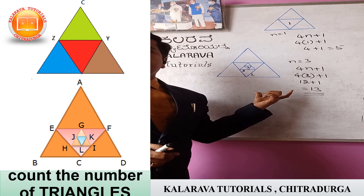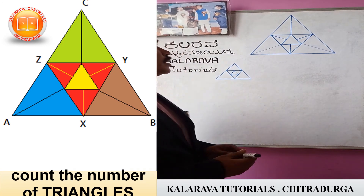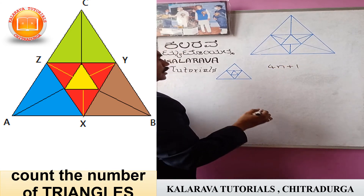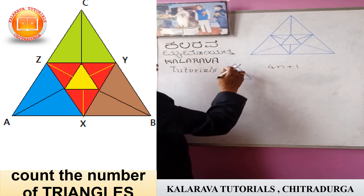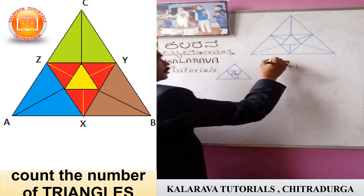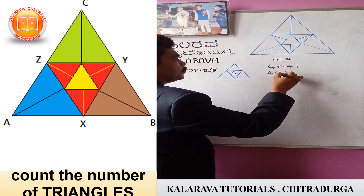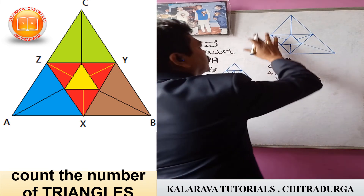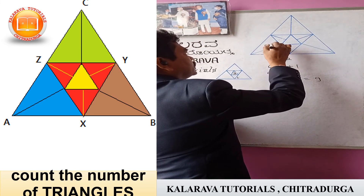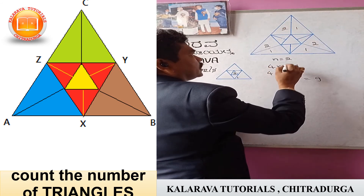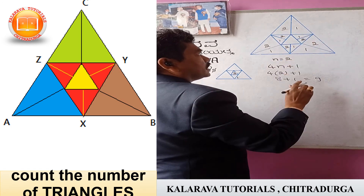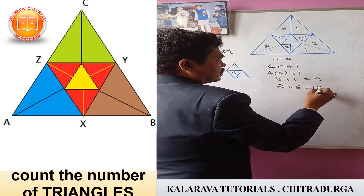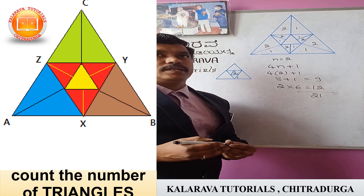We have to apply this formula for this type of triangles — find out the number of triangles in this diagram. In this diagram, you identify this one and apply the formula 4n plus 1. The triangles embedded inside the bigger triangle: here there are 2 triangles, here 2 triangles, here 2 triangles, here 2 triangles, and inside this also 2 triangles — totally 6 types. So we take 2 into 6 equals 12 triangles. That means 12 plus 9 gives 21 triangles in this diagram.